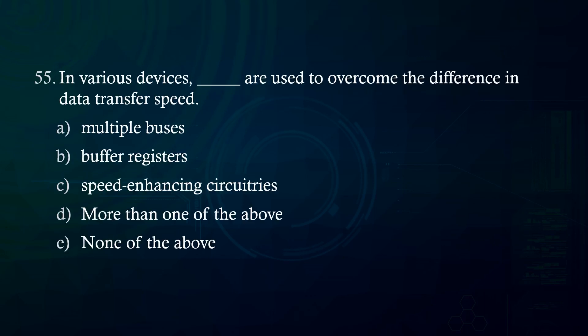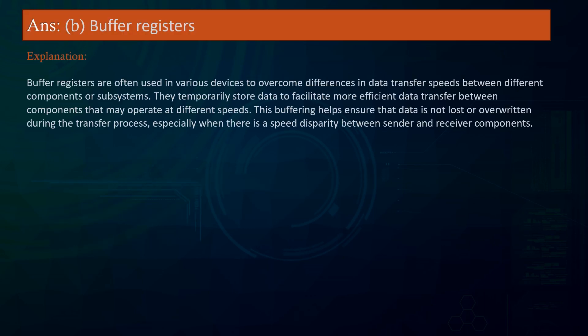In various devices, what is used to overcome the difference in data transfer speed? A. Multiple buses B. Buffer registers C. Speed-enhancing circuitries D. More than one of the above E. None of the above. Answer: Buffer registers. Explanation: Buffer registers are used in various devices to overcome differences in data transfer speeds between different components or subsystems. They temporarily store data to facilitate more efficient data transfer. This buffering helps ensure that data is not lost or overwritten during transfer, especially when there is a speed disparity between sender and receiver components.